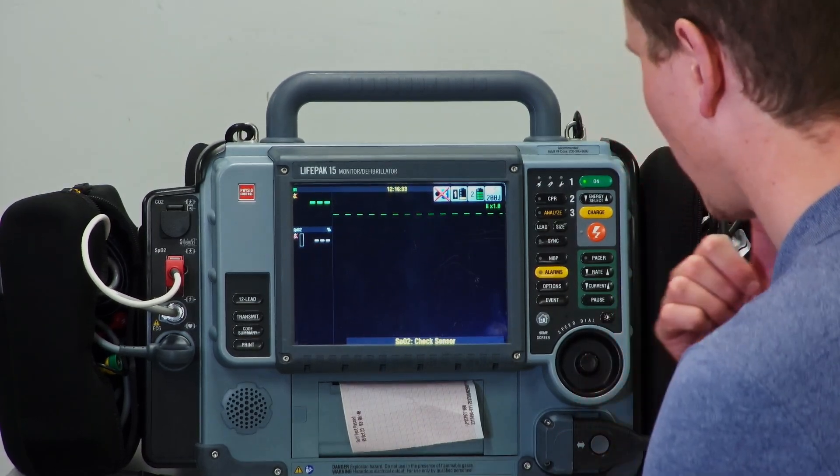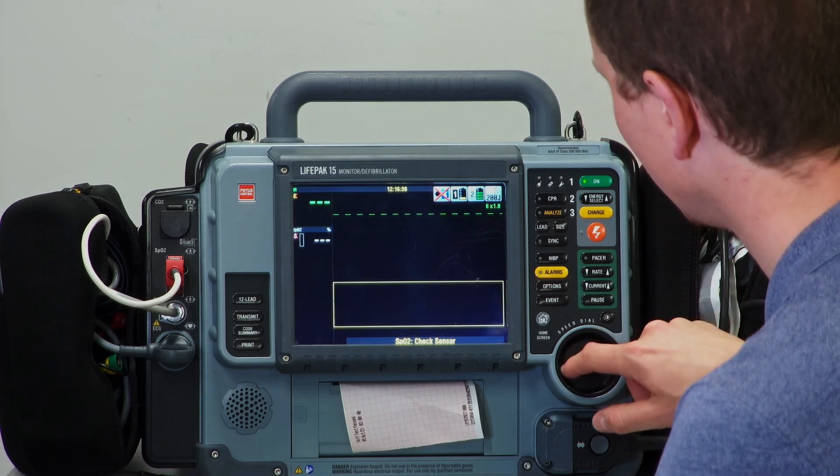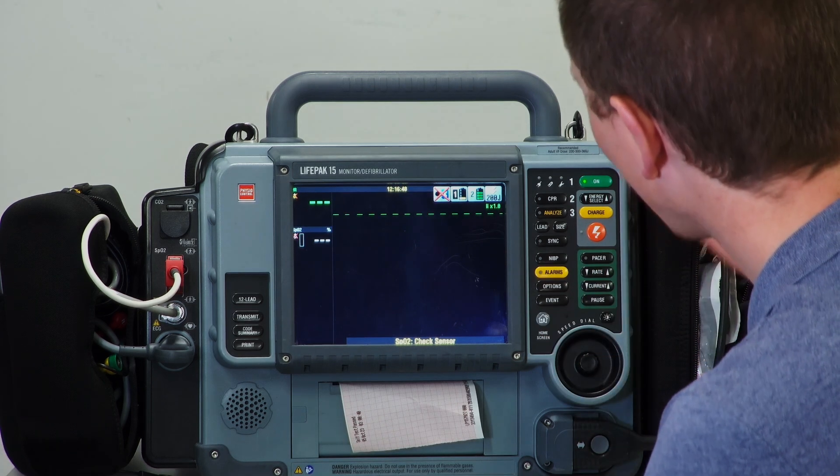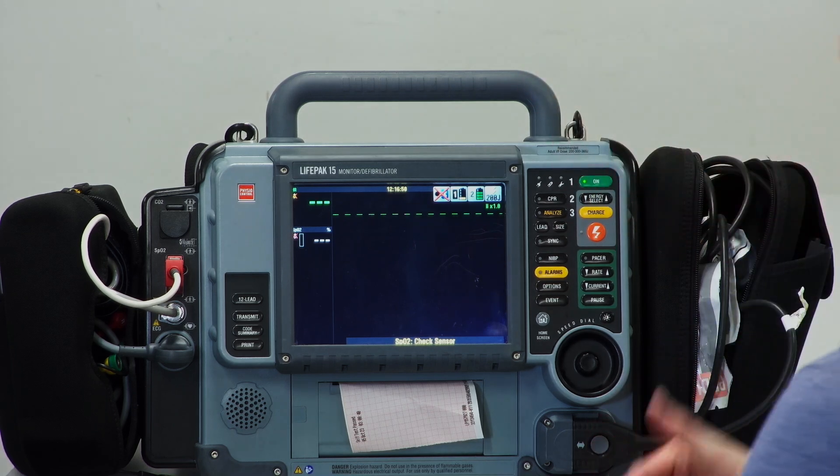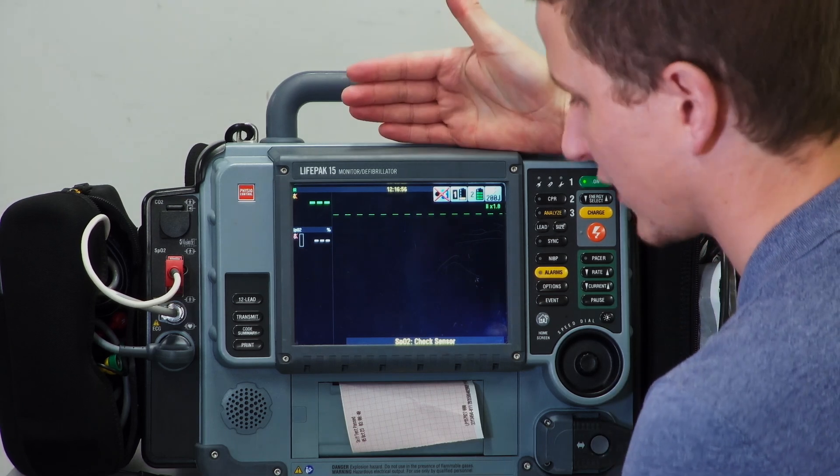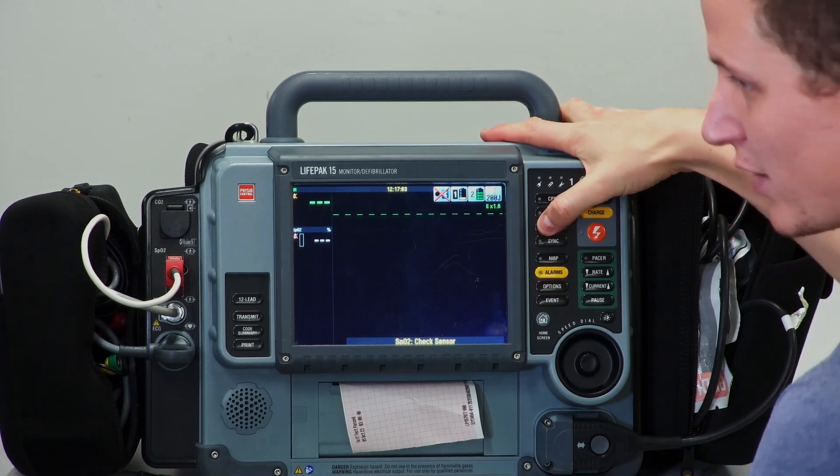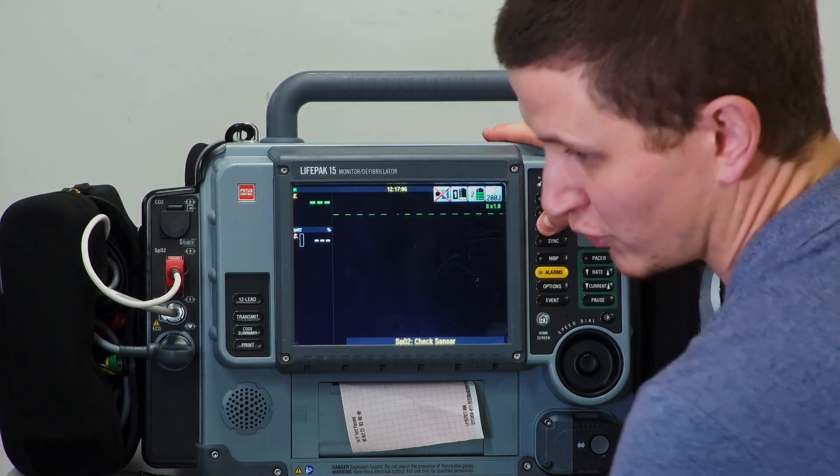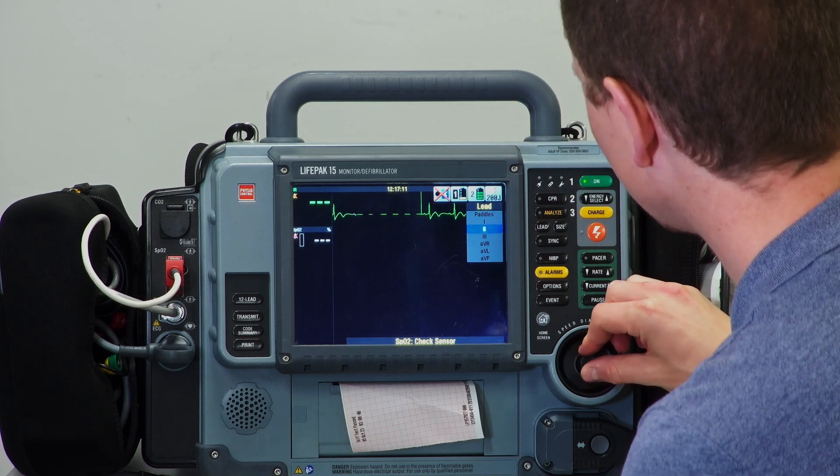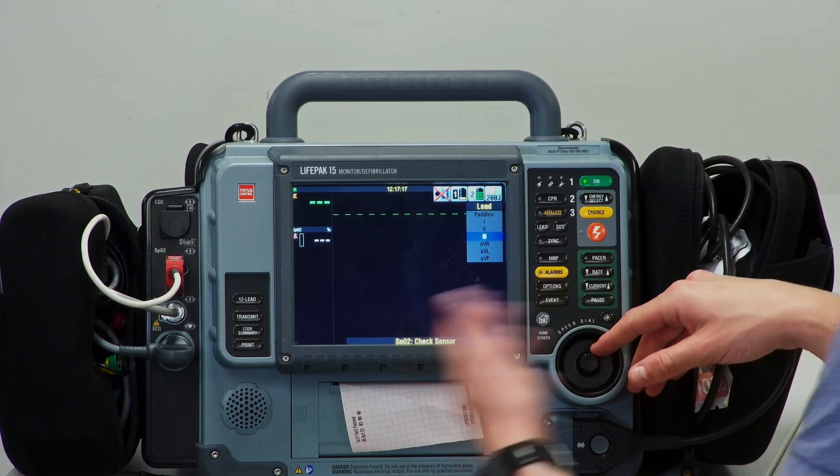A touchscreen would just break quite easily, so to control it and select things you have to turn this dial. You can push the dial in to select and rotate. If you want to cancel your selection, just hit the home button. I've plugged the machine into a rhythm generator so I can control what rhythms are popping up. We're not seeing a rhythm because we have the wrong lead selected. On a typical three or four lead ECG we have lead one, two, three, AVR, AVL, and AVF.